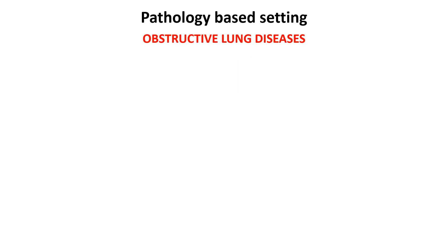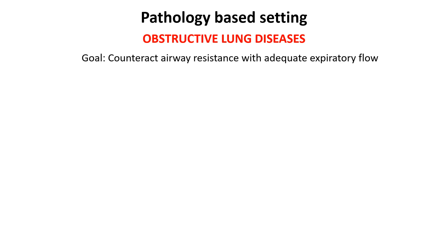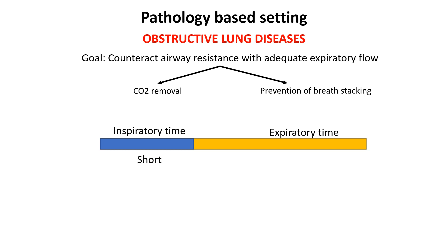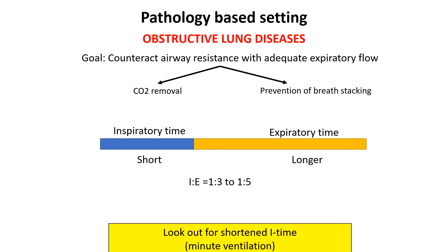In obstructive lung diseases, the goal is to allow sufficient expiratory flow to counteract increased airway resistance, ensuring effective carbon dioxide elimination and preventing air trapping and dynamic hyperinflation. Inspiratory time is shortened to allow for prolonged expiration, while expiratory time is extended to facilitate full exhalation. The IE ratio is typically set between 1:3 and 1:5 to accommodate slow expiratory flow in cases of severe airway obstruction. However, shorter inspiratory times may reduce tidal volume, requiring adjustments to the ventilation mode or settings to maintain adequate minute ventilation.